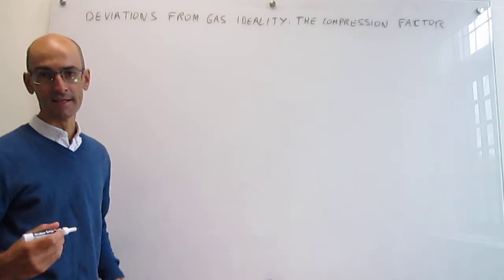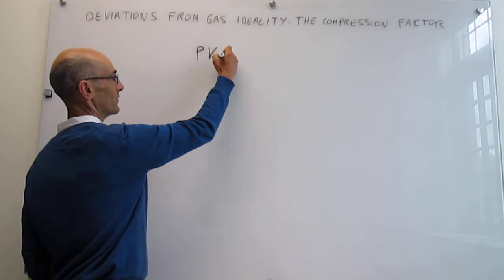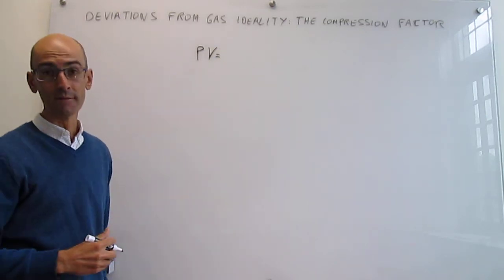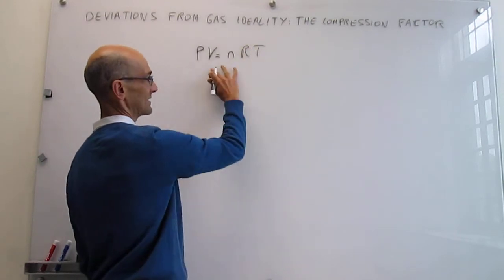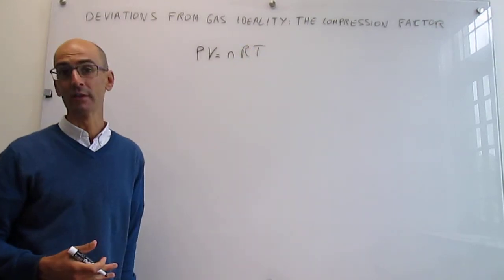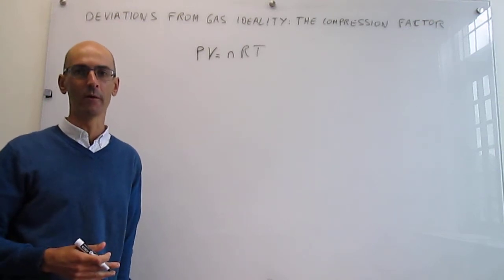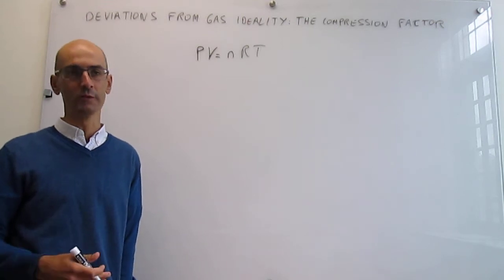The ideal gas equation of state is an equation that relates the four variables that determine the physical state of a substance. It has a very trivial aspect and is very easy to use. You can learn a lot of information about the properties of gases under normal conditions.